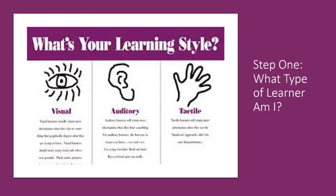The second type is auditory — these are people who learn best by hearing. And then there are tactile learners — people who need to go through the process and actually do it; they typically like to move around a lot. There are actually tests you can take online if you want to find out what your learning style is.